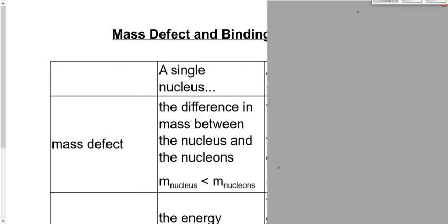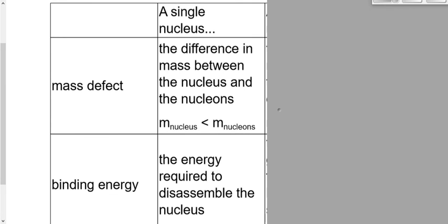We defined two terms: mass defect and binding energy. Mass defect in the context of a single nucleus is the difference in mass between what makes up the nucleus — the nucleons, meaning protons and neutrons — and the nucleus itself, which ends up weighing a little bit less. Yesterday's analogy: if we had 25 people each weighing 100 kg, we'd expect 2,500 kg total, but the actual mass is 2,497 kg. That missing mass is in a different form of energy — we call it binding energy.